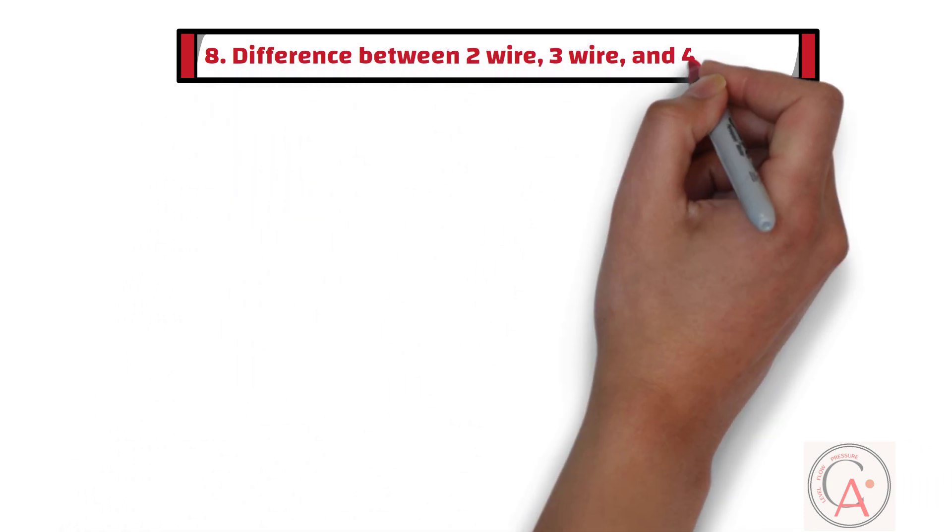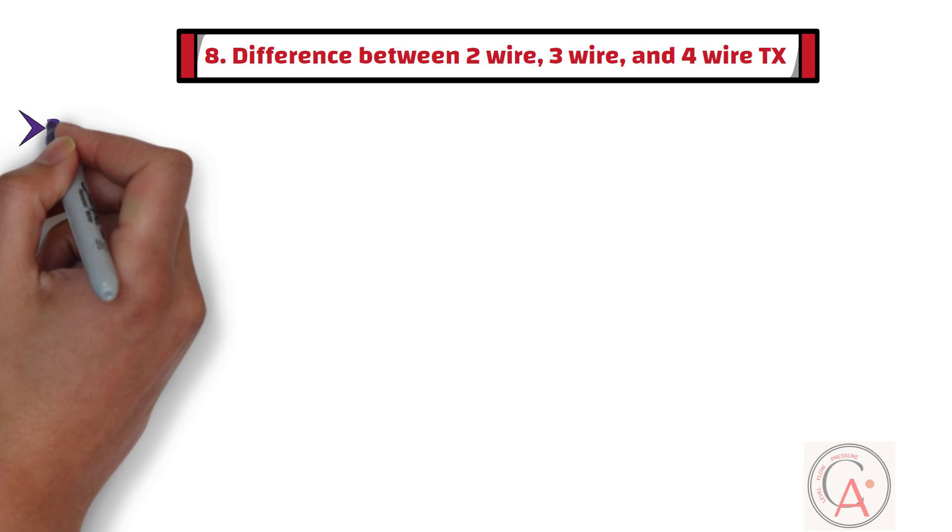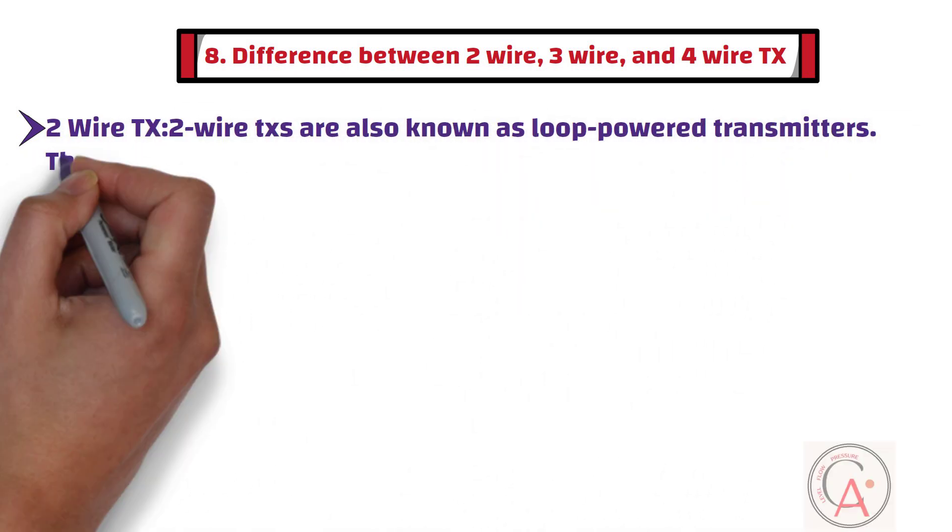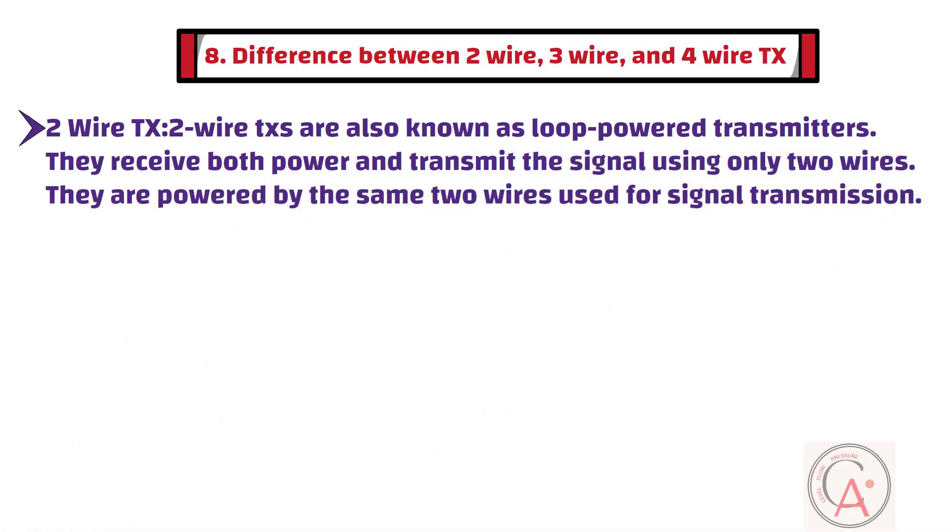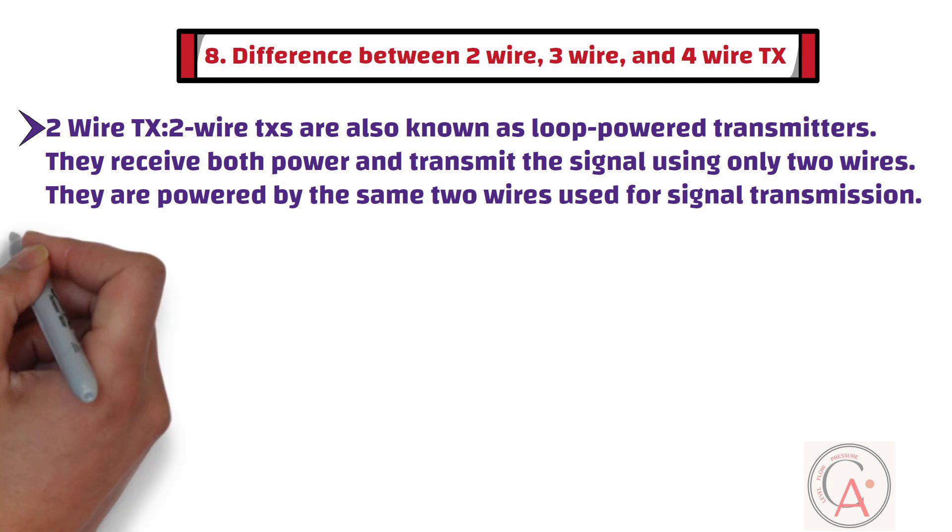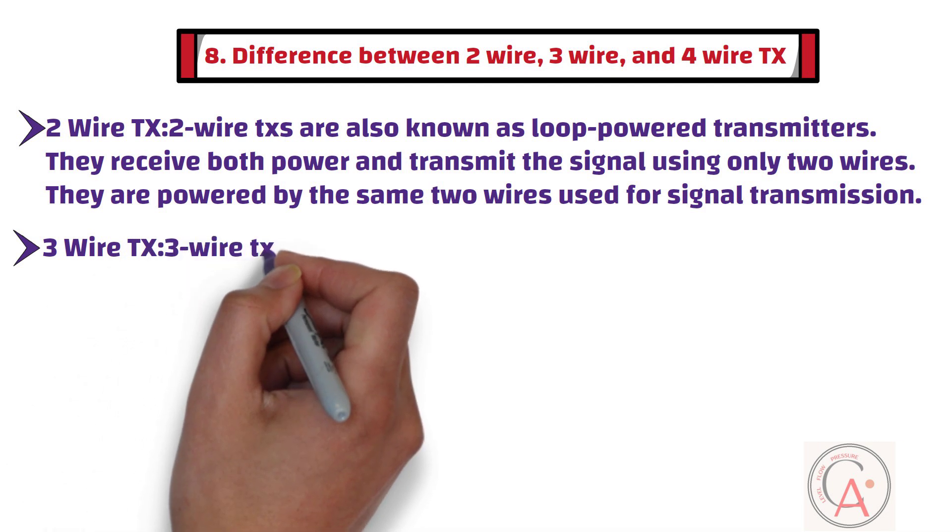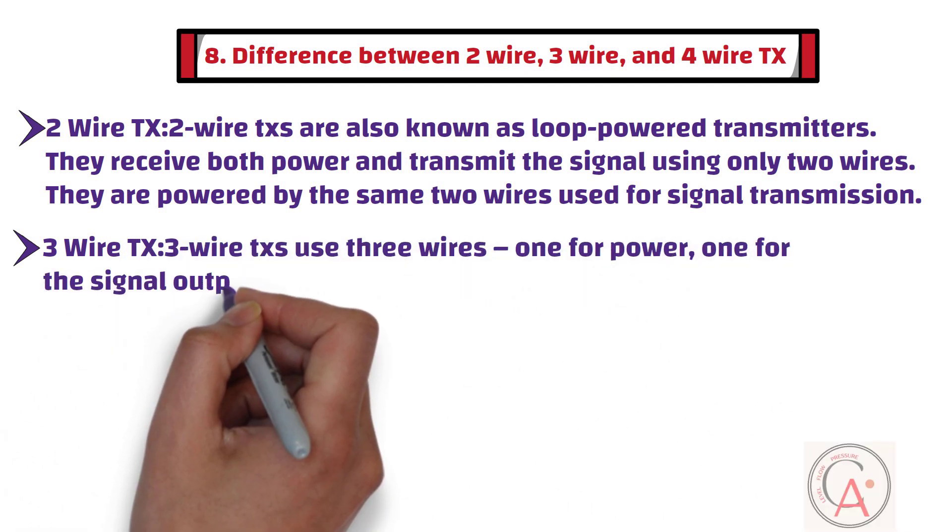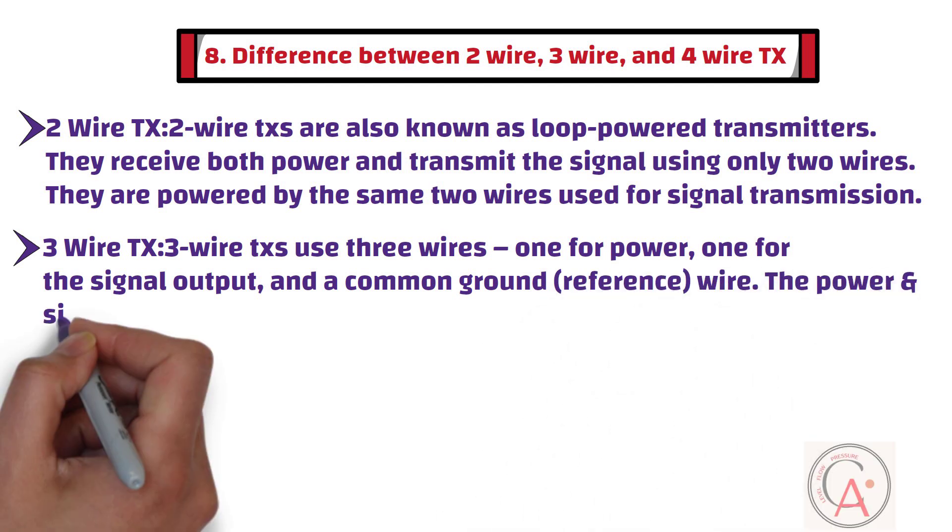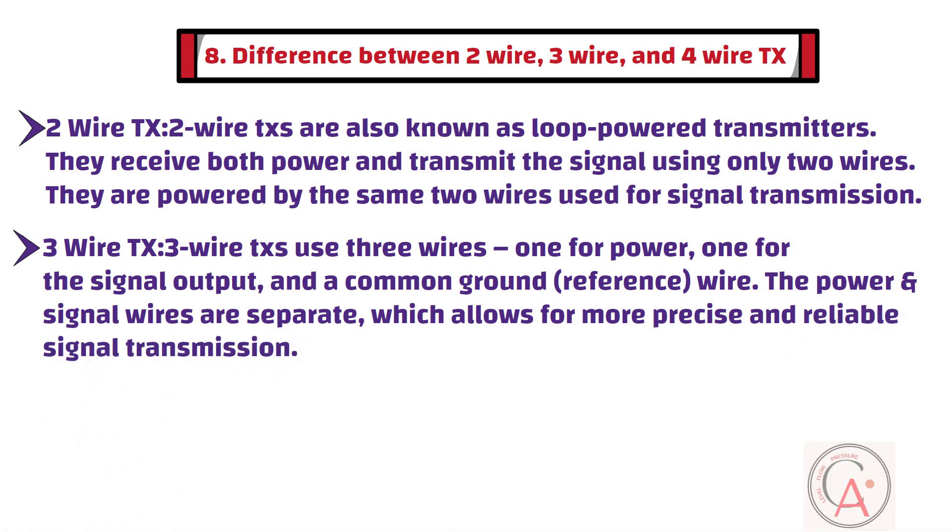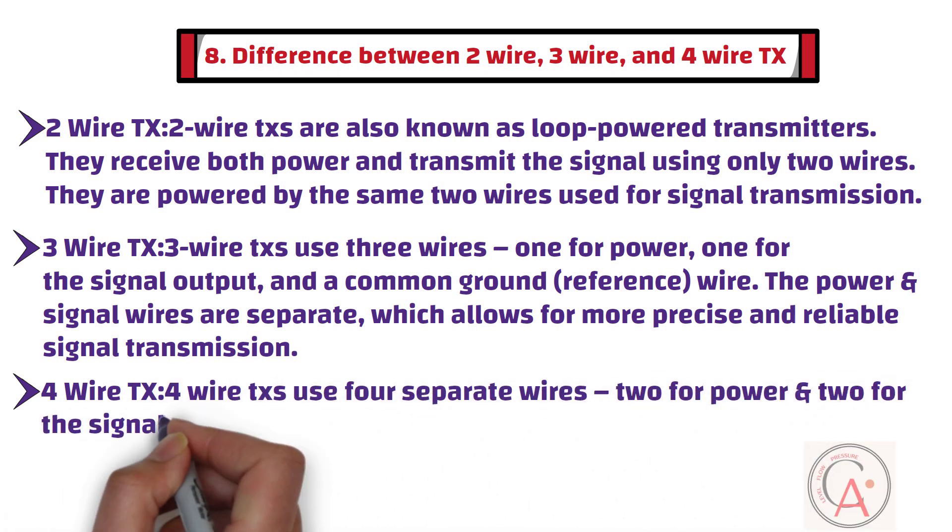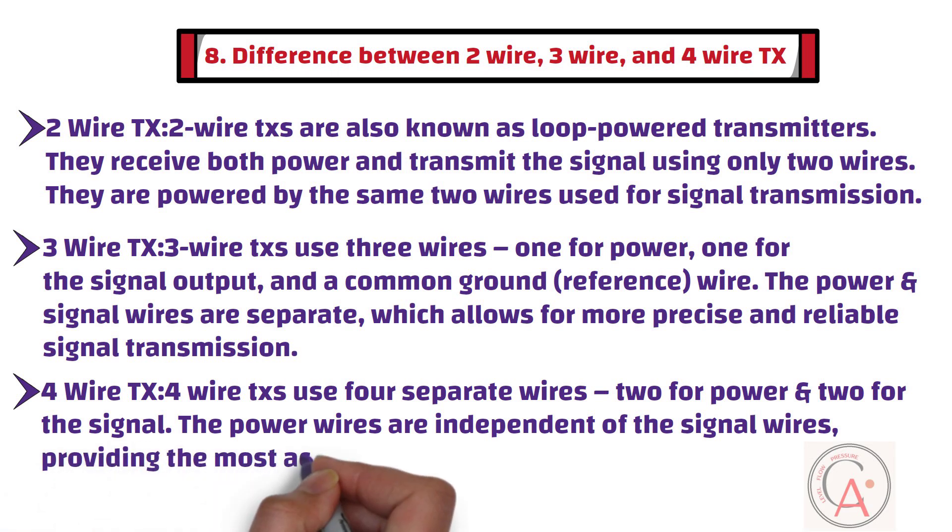The eighth question is, what is the difference between two-wire, three-wire, and four-wire transmitters? Two-wire transmitters are also known as loop-powered transmitters. They receive both power and transmit the signal using only two wires. Three-wire transmitters use three wires: one for power, one for the signal output, and a common ground or reference wire. The power and signal wires are separate, which allows for more precise and reliable signal transmission. Four-wire transmitters use four separate wires: two for power and two for the signal. The power wires are independent of the signal wires, providing the most accurate and reliable measurements.